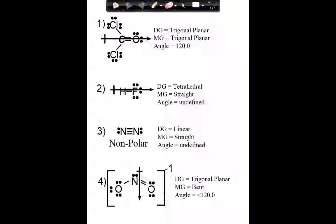Going back to assignment number one — what did you learn? What were the big ideas? What do the big arrows represent? Overall polarities, right. And so what are those overall polarities the sum of? What are they the result of?